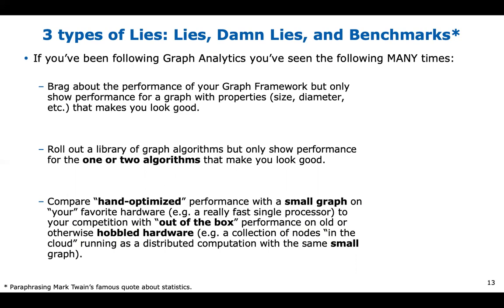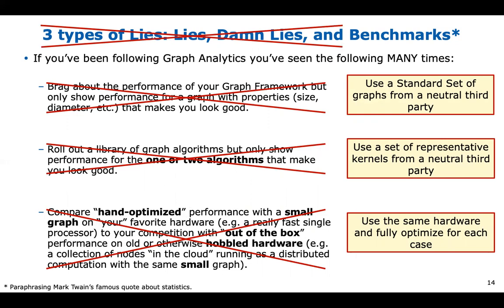We have to start doing benchmarks right. Use a standard set of graphs from a neutral third party so you don't get to choose which algorithms you run — a neutral party provided that set. Likewise, graphs come from a neutral third party, some big, some small, some awkward, to ensure diversity. Finally, if you're going to compare frameworks, run them on the same hardware and put just as much effort into optimizing each one. These should be the common principles of honest benchmarks.